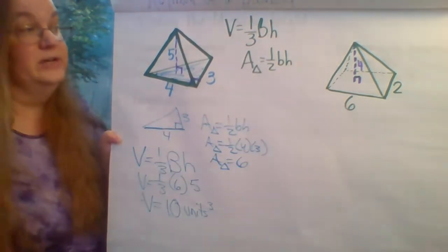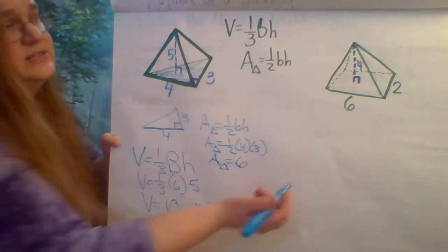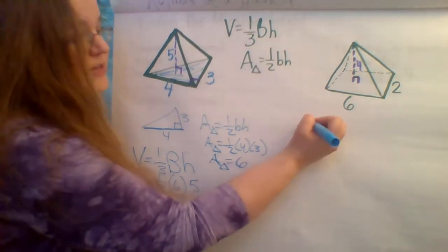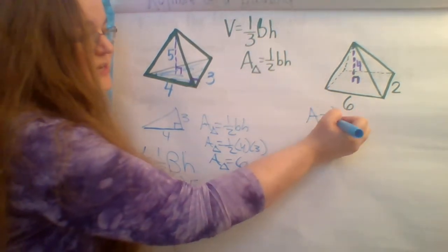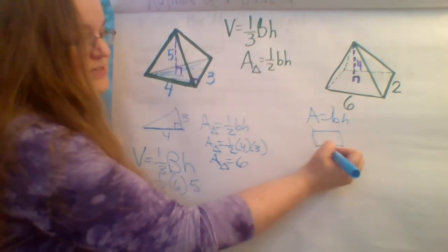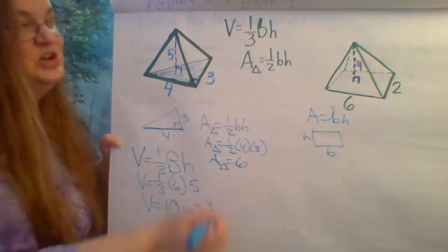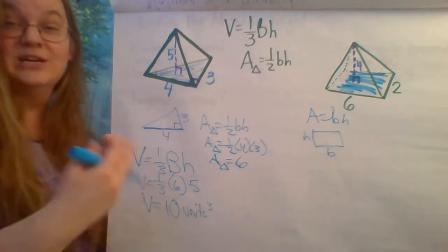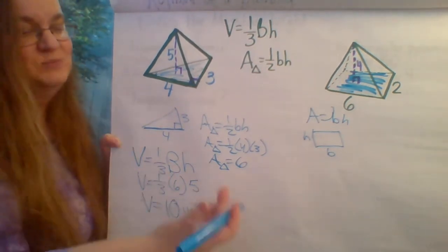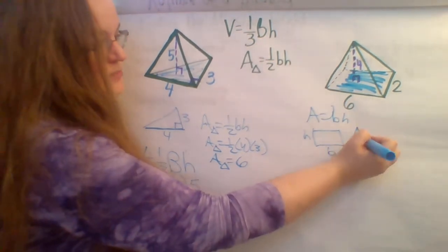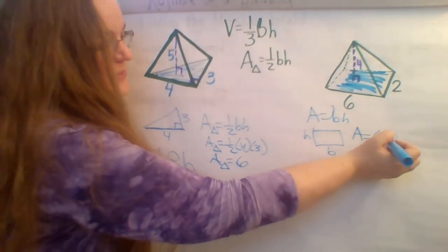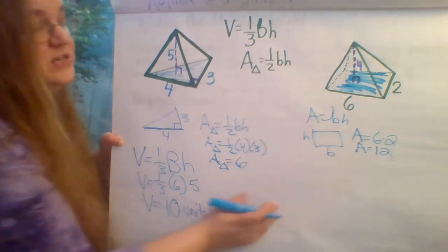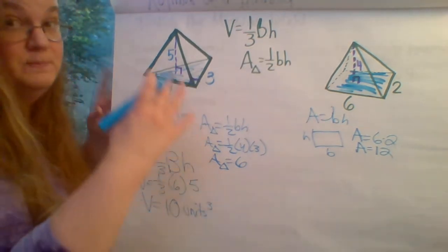Let's take a look at this one, going through the same process. This time the shape on the bottom is a rectangle. So I'm going to find the area of the rectangle, which is just base times height. When we're talking about a rectangle, this is the base and this is the height. We're also referring to this whole shape that the pyramid sits on as a base, so make sure you're paying attention to which base we're talking about. It's just 6 times 2, which is 12 — so the area of the base, big B, is 12.